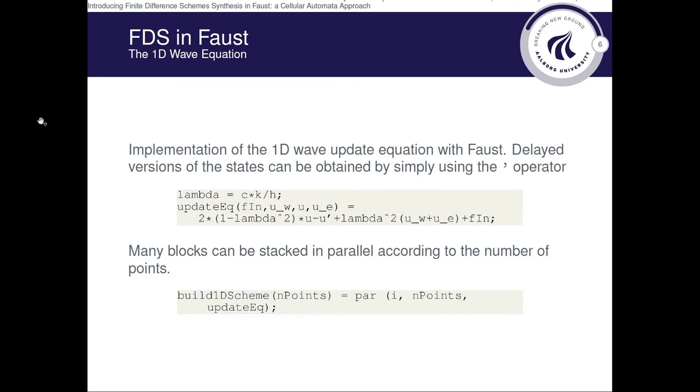Now we can start by implementing a finite difference scheme for the 1D wave equation. First, we need to define the time and space sampling steps, and this is the stability condition, where C is the speed of sound.